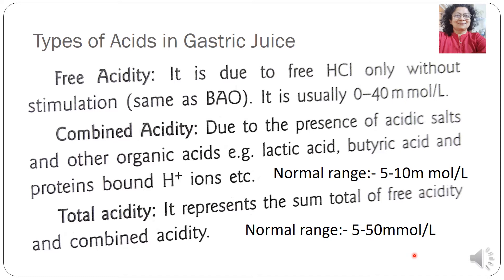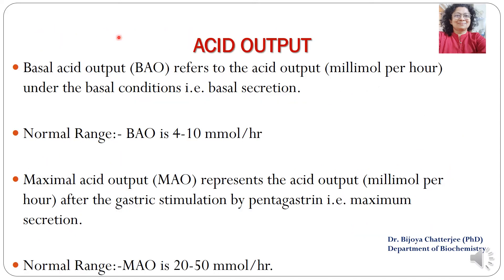So gastric juice has three types of acidities: one contributed by HCl, the second due to organic acids, and the third is a summation of free and combined acidity. The other important terminology is acid output. The acid output of gastric juice can be measured as basal acid output or maximal acid output.